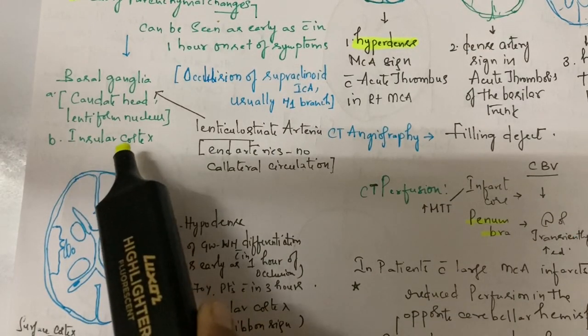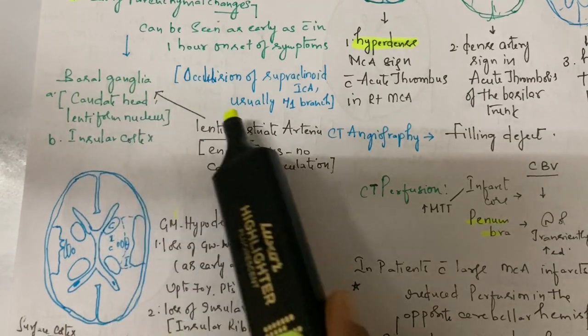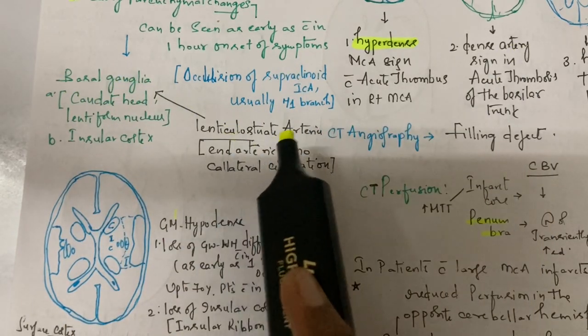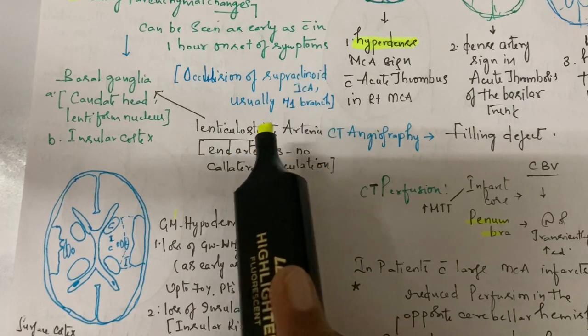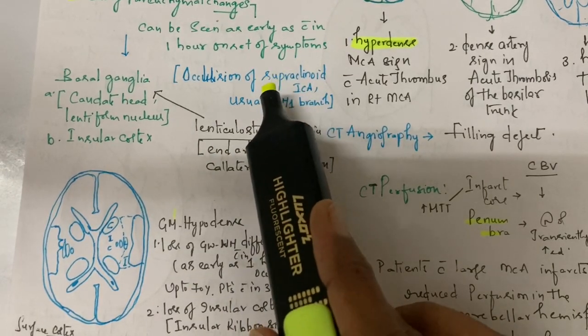Remember, basal ganglia is supplied by lenticulostriate arteries. These are end arteries with no collateral circulation. Most common vessels involved are supraclinoid ICA and the M1 branch.